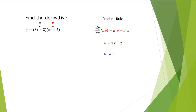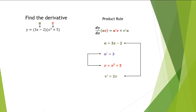We're given v as x squared plus 5. From v, we can find v prime, which is 2x. Now we'll simply use the product rule and multiply u prime times v plus v prime times u.